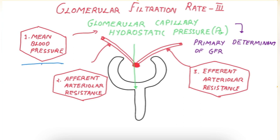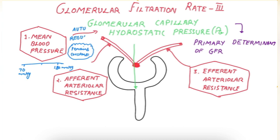Within a mean blood pressure of 70 to 180 millimeters of mercury, the glomerular capillary hydrostatic pressure remains more or less constant — that is, it is auto-regulated. Hence, GFR is also auto-regulated.